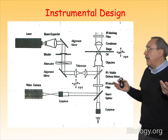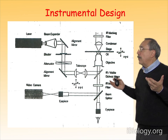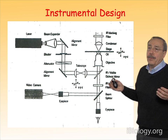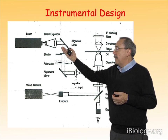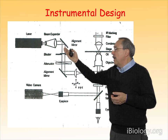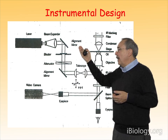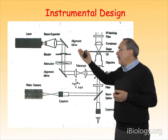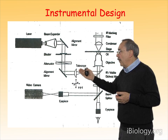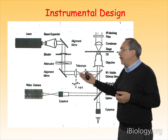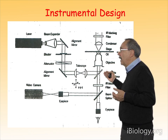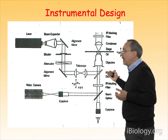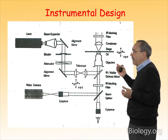The design of an instrument that actually carries out optical trapping is quite simple. All you need is a source of light, in this case a laser. You can then span that laser through a number of optical pieces, and eventually you will fill the back focal plane of an objective lens, as shown here.